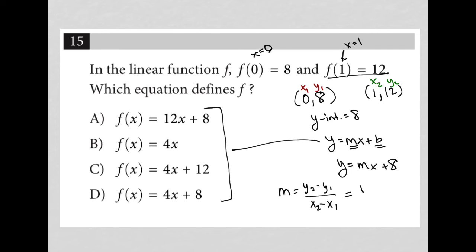And therefore, I'd end up with a 12 minus 8 over 1 minus 0, which is 4 over 1. So that means m is equal to 4.